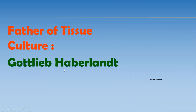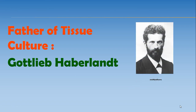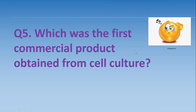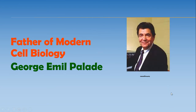Next is the father of tissue culture, Gottlieb Haberlandt. He discovered plant tissue culture techniques using potato. Question number five: which was the first commercial product obtained from cell culture? Write the answer in the comments. Next is the father of modern cell biology, George Emil Palade. He discovered the cell organelle ribosomes.